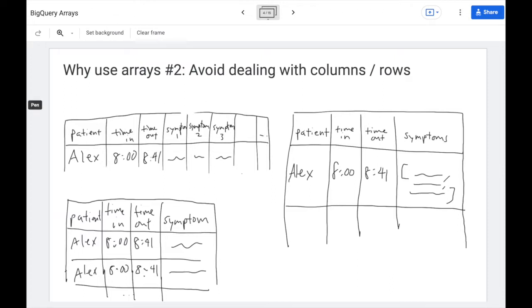For example, you have a data set of patients when they clock into your practice and the symptoms they report for every visit. Well, if you choose to represent each symptom they report as a column, then you'll have a lot of columns that you need to hard code into your SQL queries. And many of these columns may have null values because some patients just won't report any symptoms.